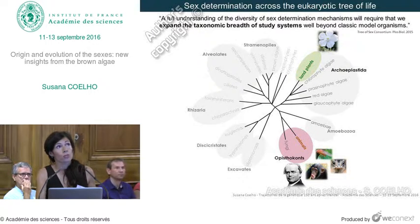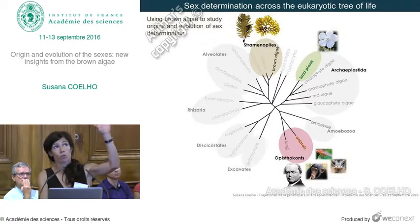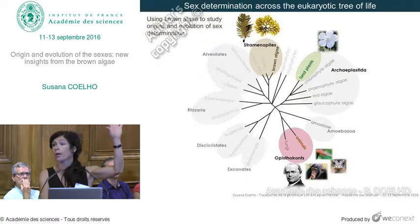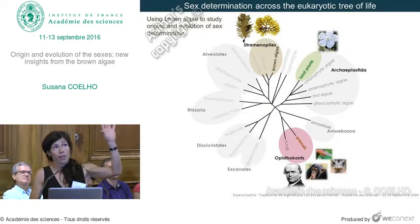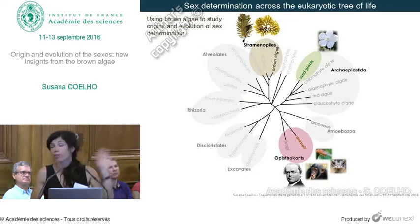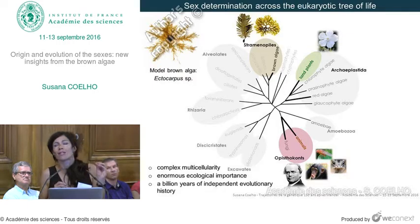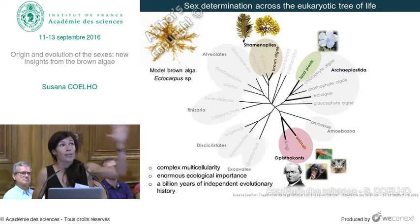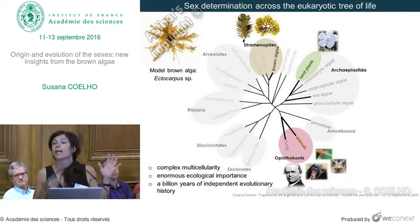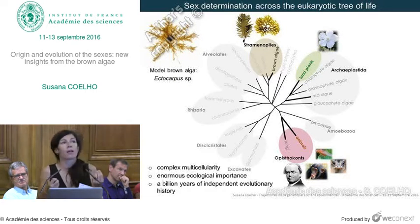This is what we've been doing in my lab for the last few years. We are really interested in brown algae, a distant group belonging to the stramenopiles. Brown algae are almost as distantly related to land plants as they are to animals, even though they do photosynthesis. Brown algae are part of a very small number of eukaryotic groups that have evolved complex multicellularity — there are only five groups that have tissues, organs, and cellular differentiation.